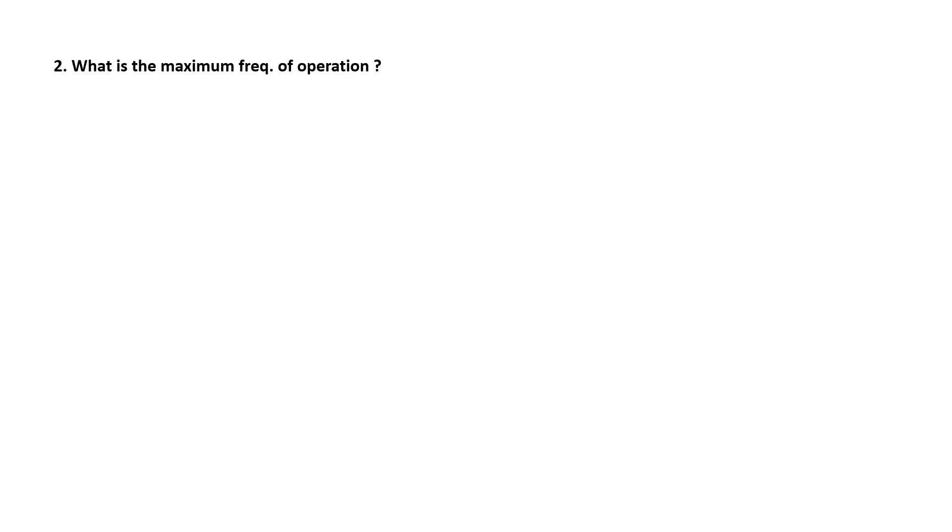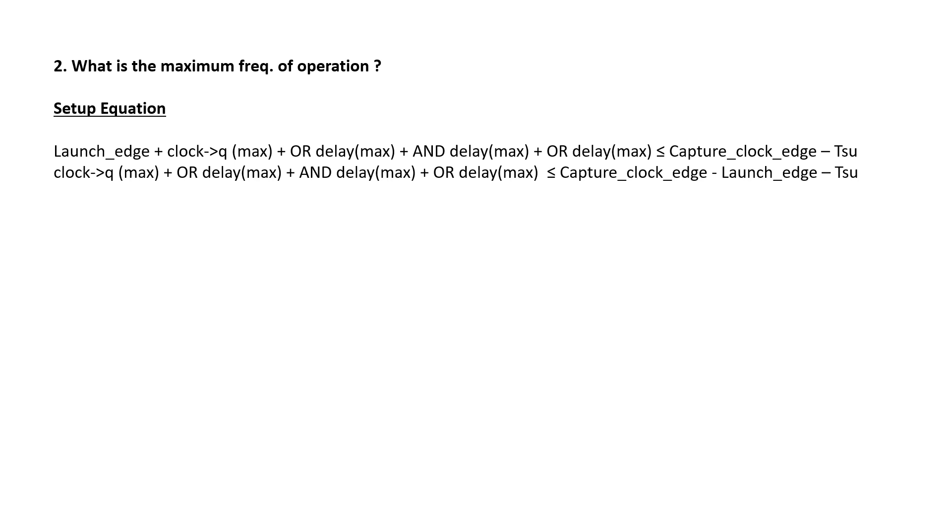Second question is to find the operating frequency. Starting with the setup equation for the worst case scenario that is the slowest path. We can write the equation as launch edge plus clock to Q delay max plus max delay of the OR gate, max delay of the AND gate and max delay of the second OR gate should be less than or equal to capture clock edge minus setup time. Let's rearrange the equation a bit. Now the capture clock edge minus the launch clock edge is the time period. Simplifying this equation, we reach at a maximum frequency of 3 GHz.